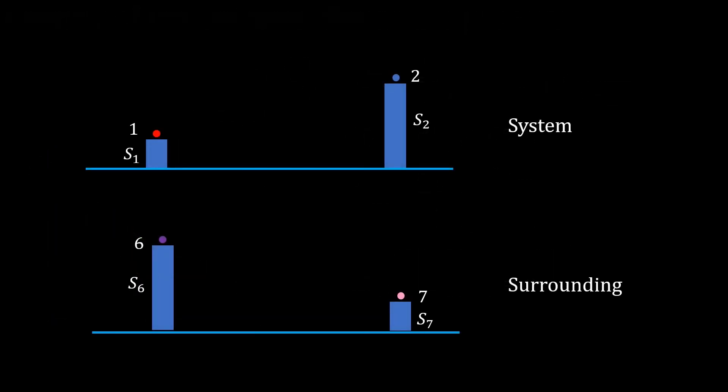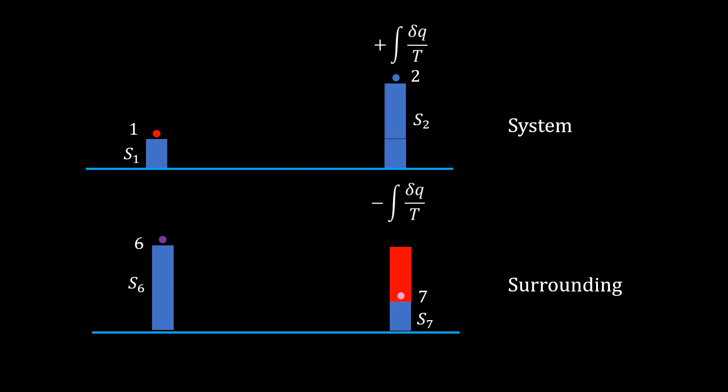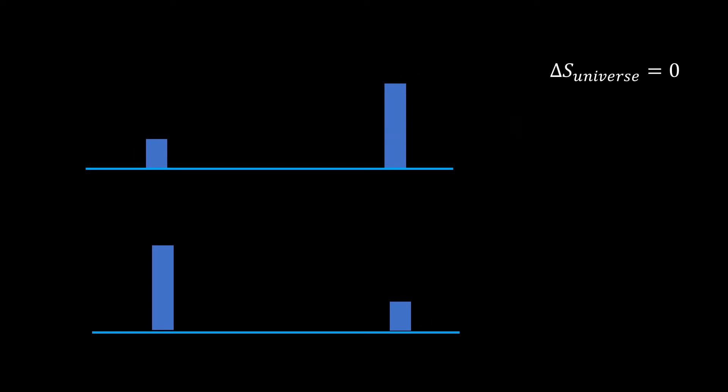Let's see a visualization. The system and the surrounding are in some initial states 1 and 6, with entropy values s1 and s6 respectively. When the system reversibly moves to state 2, the surrounding moves to another state 7 in a reversible manner. In both the system and the surrounding, the integration of Q divided by T equals the actual entropy difference between the final and initial states. The total entropy change of the system plus surrounding results in no net entropy change — the entropy change of the universe equals zero. From the surrounding to the system, entropy is only transferred; no entropy is generated.